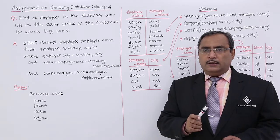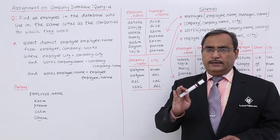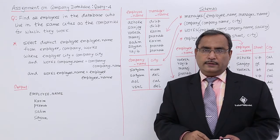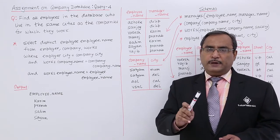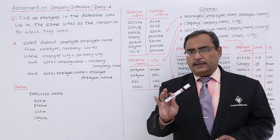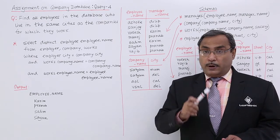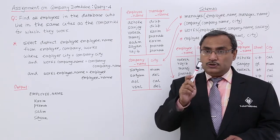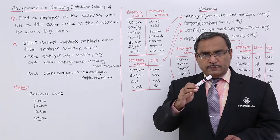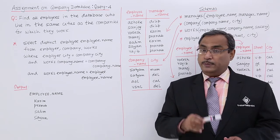The thing is that if there is one employee, say Karim, who is living in a city say Delhi, and there is one company say AOL having a branch office at Delhi, but Karim is not working at AOL, then Karim's name will not come in the output. So remember this.